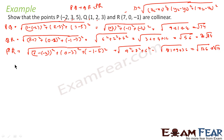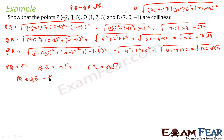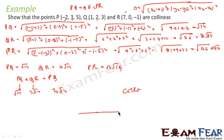Now we have PQ = √14, QR = 2√14, and PR = 3√14. We can see that PQ + QR = √14 + 2√14 = 3√14 = PR. Therefore, these points are collinear. Only if the points are collinear will PQ + QR equal PR; if they were not collinear, we could not say PQ + QR = PR.